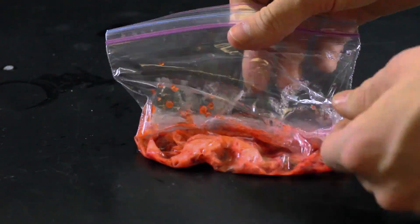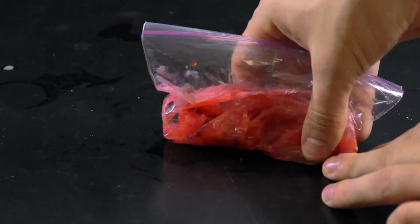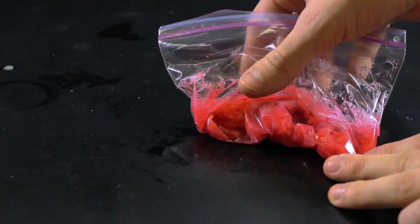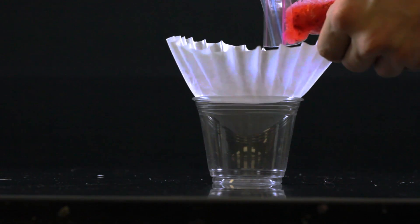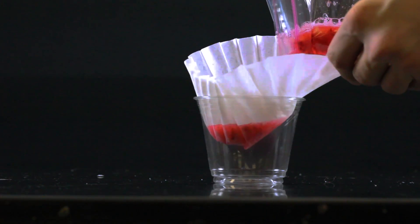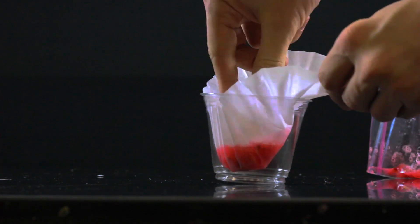At this point the DNA will be floating around in solution as well as other big pieces of the cell. The next step is to separate the DNA from these big pieces using a coffee filter. Pour some of your mixture into a coffee filter and let it drip through into a new container.